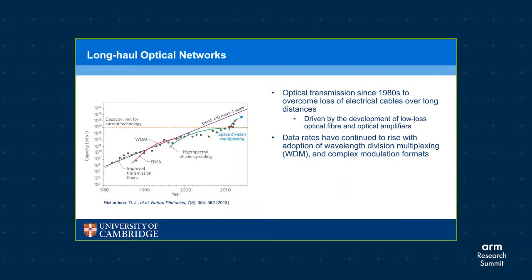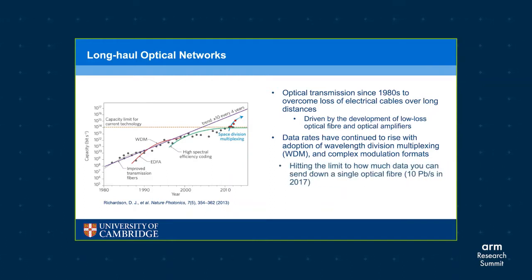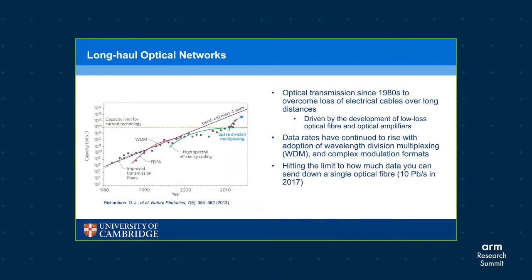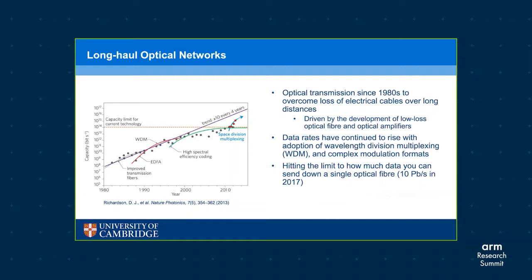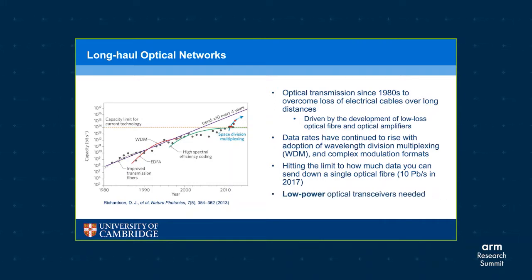To continue pushing capacity beyond the limits of a single optical fiber, we need to move to using bundles of optical fiber or completely different fiber architectures with more cores. These combined approaches have led to the current record of 10 petabits per second, demonstrated in 2017. These massive data rates put a heavy strain on existing optical networks, and when it comes down to it, the limiting factor is power. To make future long distance networks sustainable, low power optical transceivers are needed.